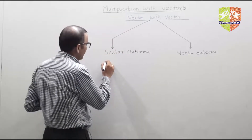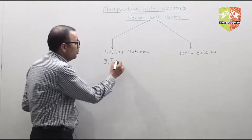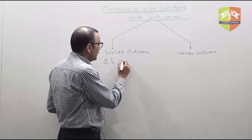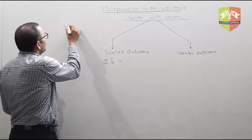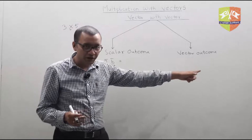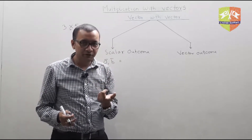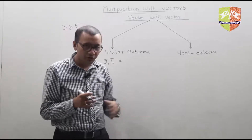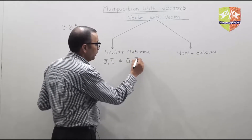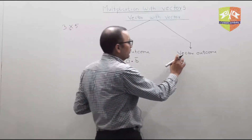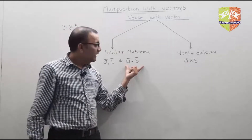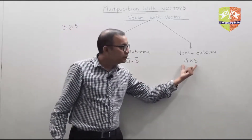Suppose two vectors a and b are there and you want to multiply using scalar multiplication. When you multiply two numbers, you write them with a cross in between. But now you have two different ways of multiplication, so you can't have only one way of writing. That is why a different notation exists for both. For scalar multiplication, you write a dot b. For vector outcome, you write a cross b.